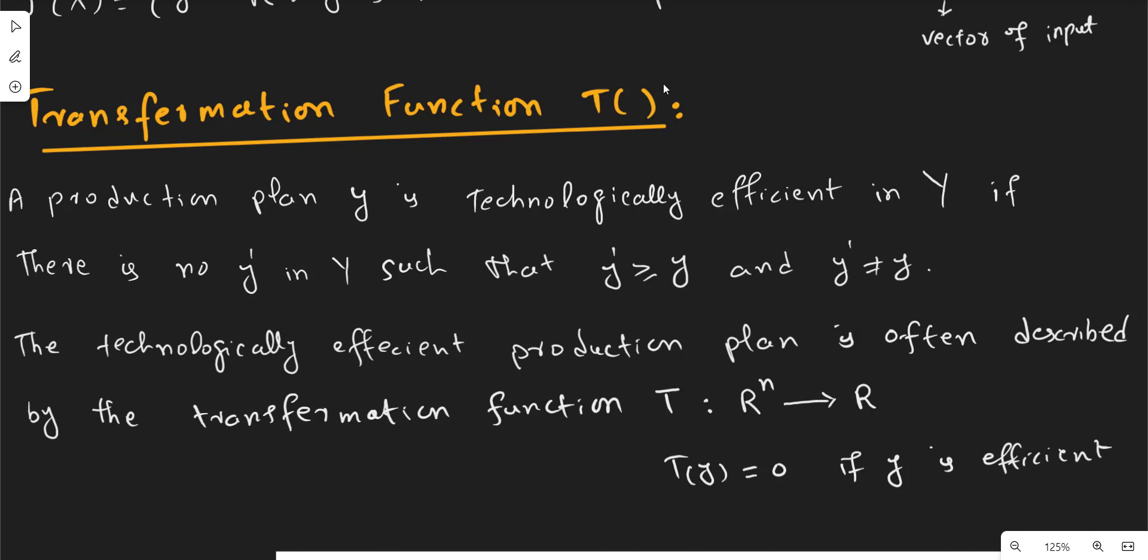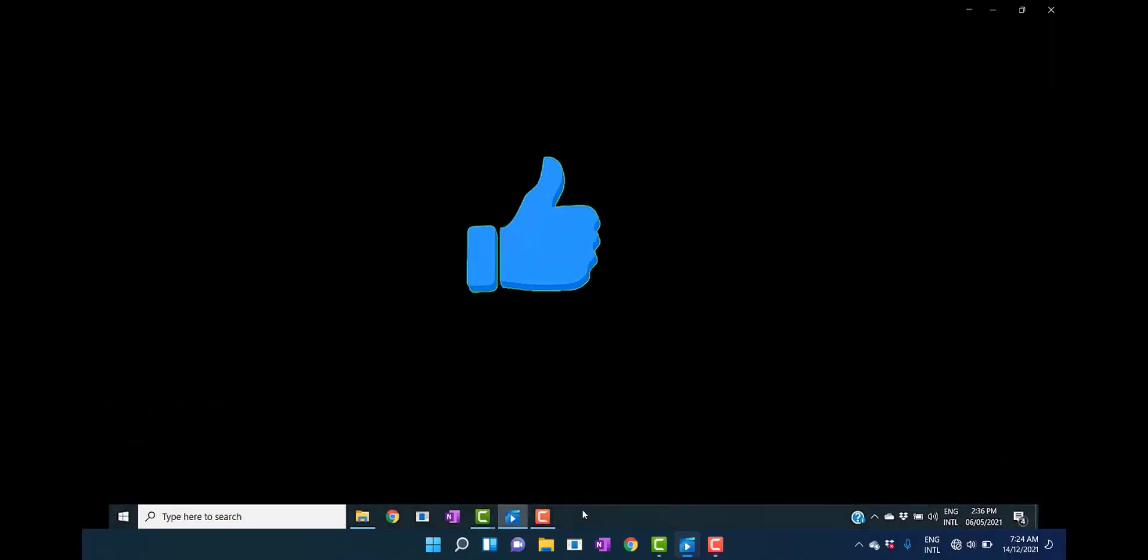Today in this lecture video we are going to discuss transformation function and its implication in microeconomic analysis. We are starting from the production possibility set. Production possibility set is a universal set which covers all possible production plans.